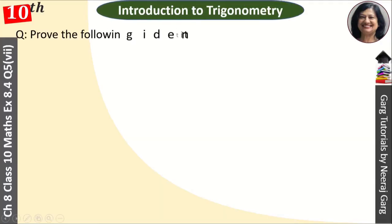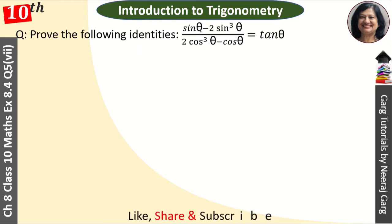Hi, this is Neeraj Garg and you are watching Garg Tutorials. Prove the following identity: sin θ minus 2 sin³ θ upon 2 cos³ θ minus cos θ is equal to tan θ. So we have sin θ minus 2 sin³ θ upon 2 cos³ θ minus cos θ.